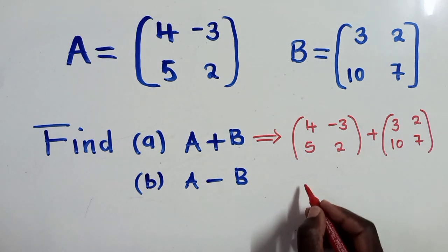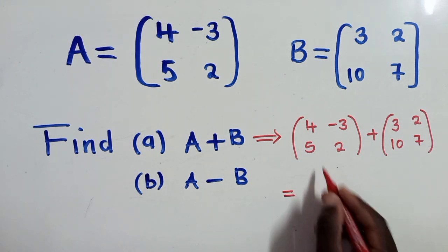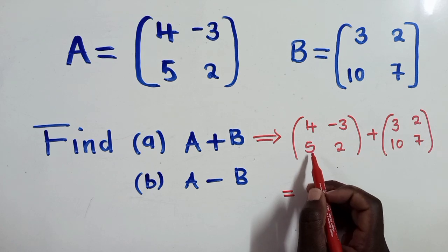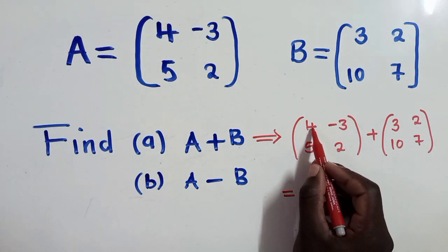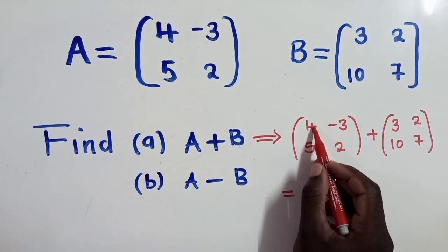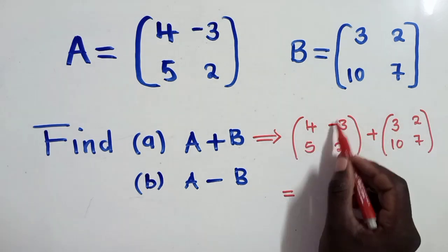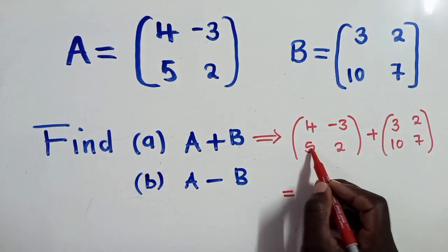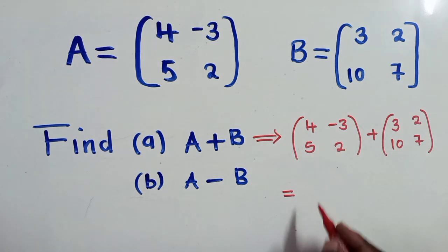So this is what you do. Now from this stage, you start adding the corresponding entries. So this 4 is at this position, will go with a 3. Negative 3 will go with 2, 5 with 10, 2 with 7.